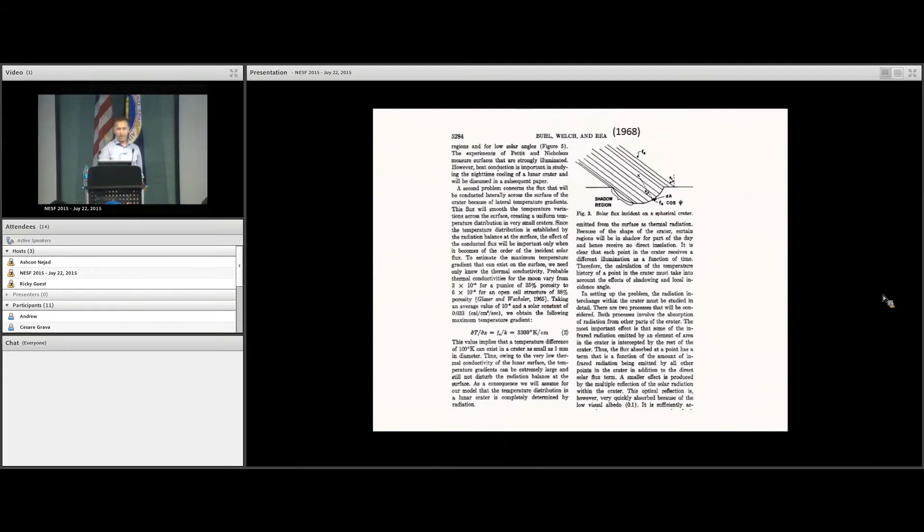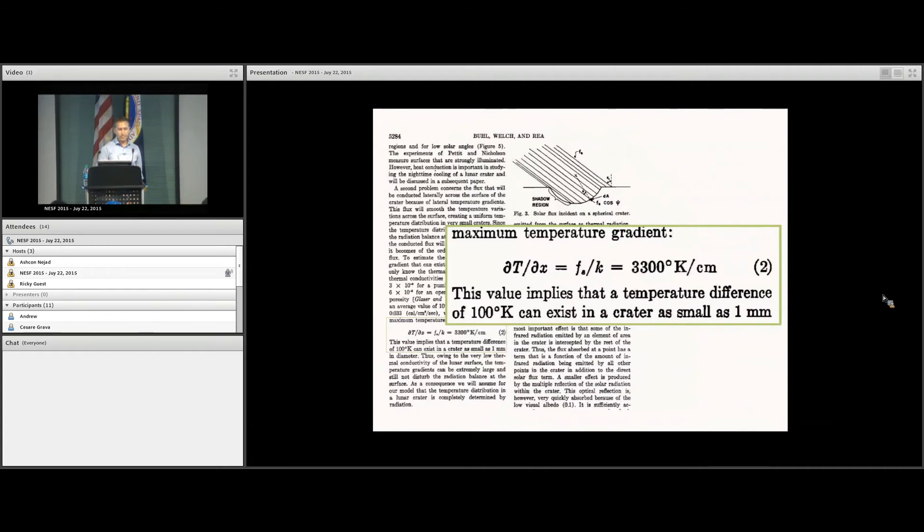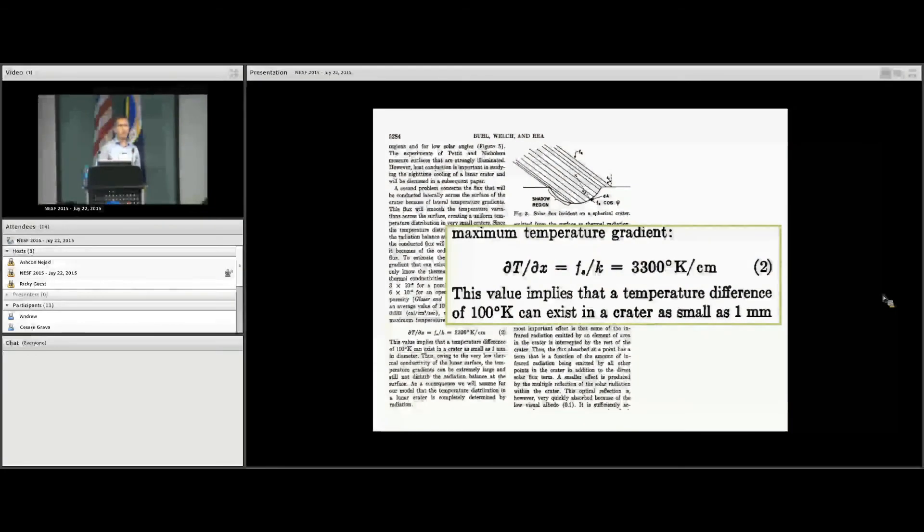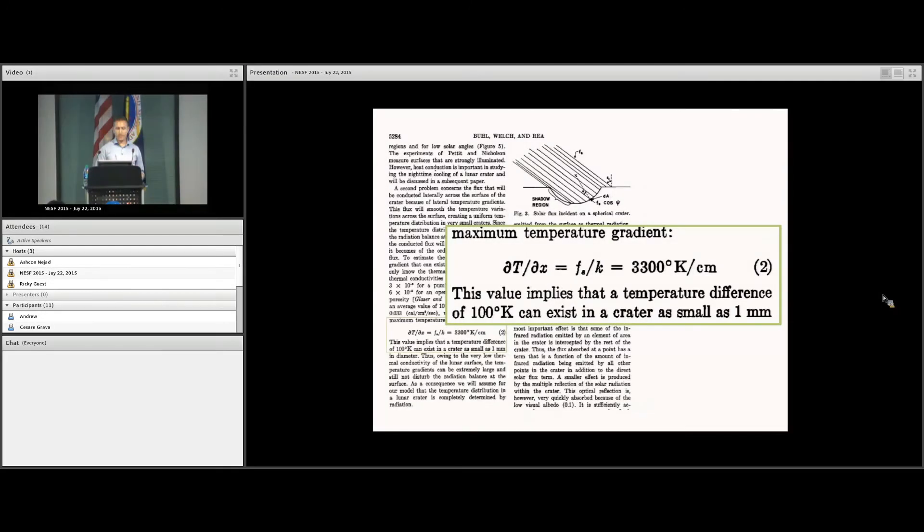This idea dates back to at least 1968, a paper by Boole et al. They were interested in the microwave thermal emission from the moon and the effects of surface roughness. They pointed out that because of the lack of an atmosphere on the moon and the extremely insulating nature of the surface, you can maintain huge temperature gradients across the surface. We're not used to this on Earth where there are many effects including air circulation to even out thermal gradients. If you do this simple calculation and divide the solar flux by the thermal conductivity of lunar regolith, you can maintain temperature gradients of hundreds of degrees over millimeters.